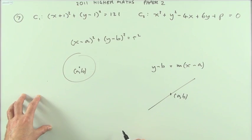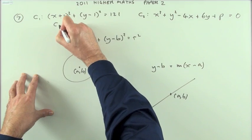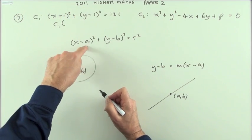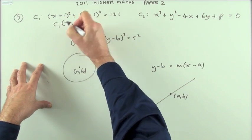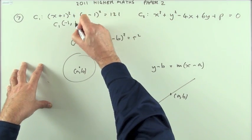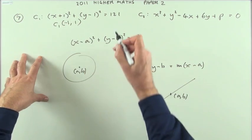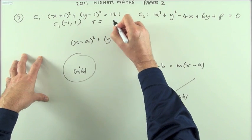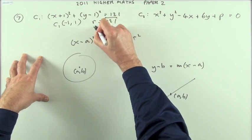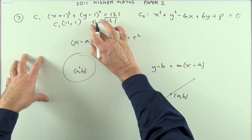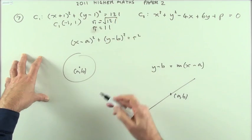The circle is displaced from the origin, so you can see straight away that the center is whatever's being subtracted — that gives negative one, positive one for the center. The radius will be the square root of 121, so the radius is 11.